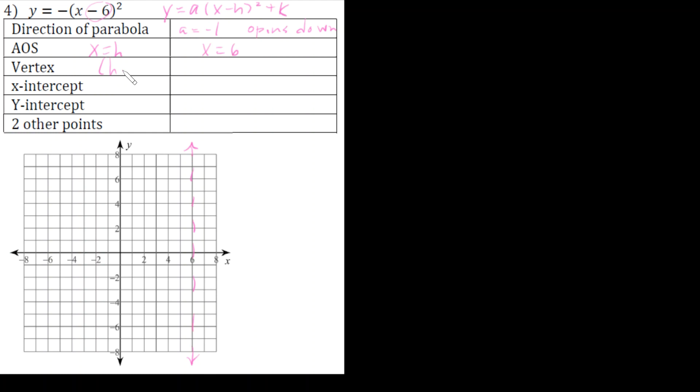And the vertex is h, k, so that's six comma... there is no k, which means there's a plus zero there. That means the only other option is that it's zero. So I'm going to go ahead and plot that point. It's going to go right here, and notice that is also my x-intercept, six zero. I don't need to set the equation equal to zero.